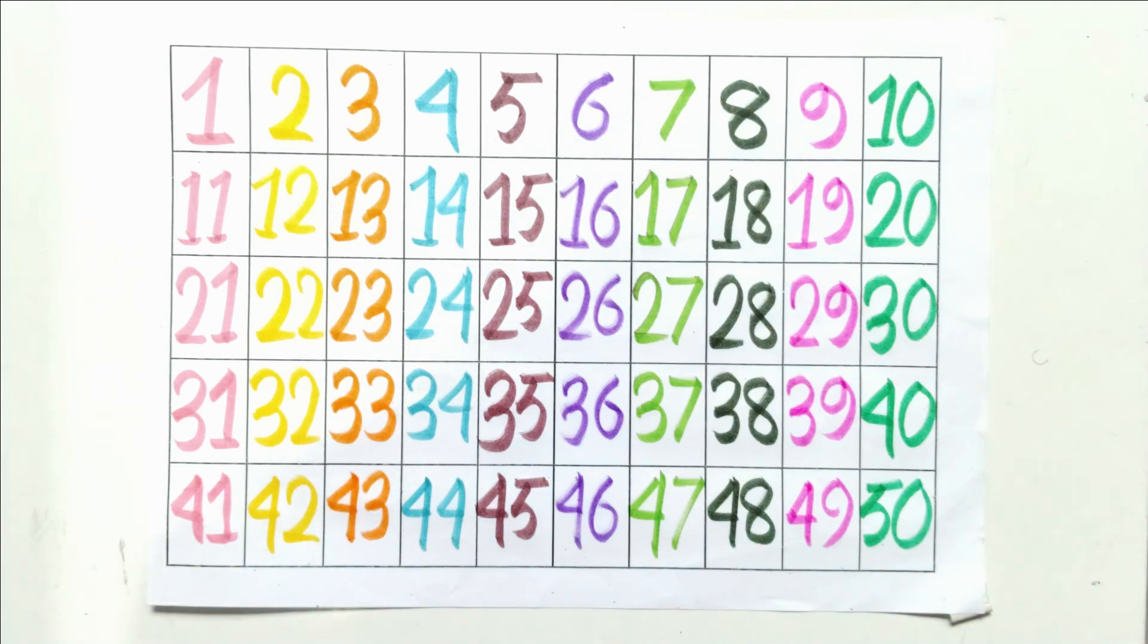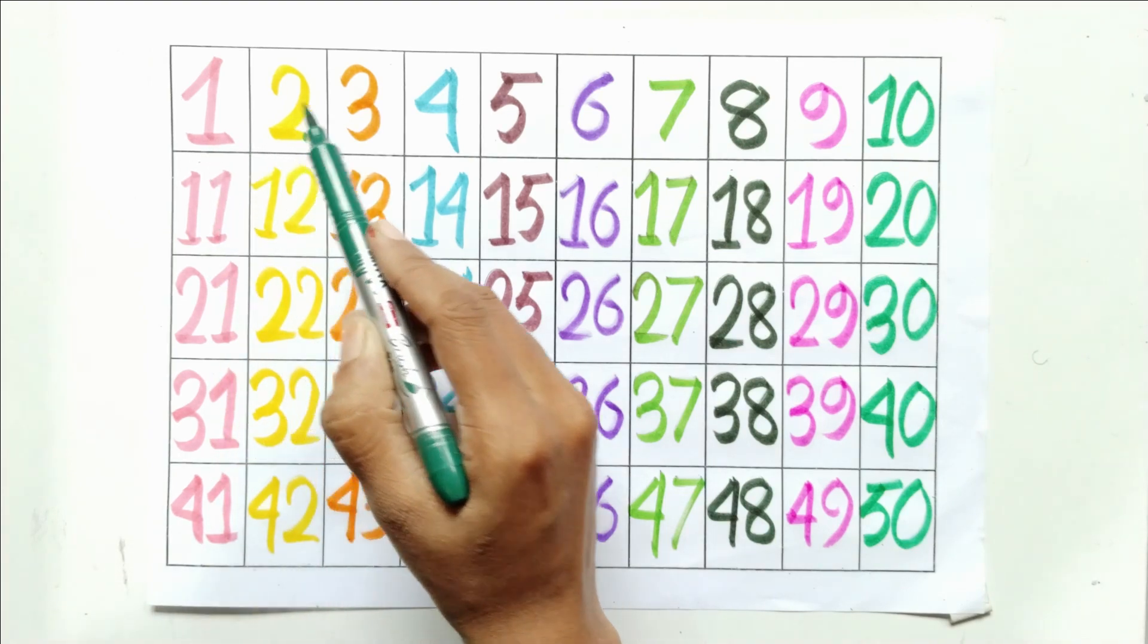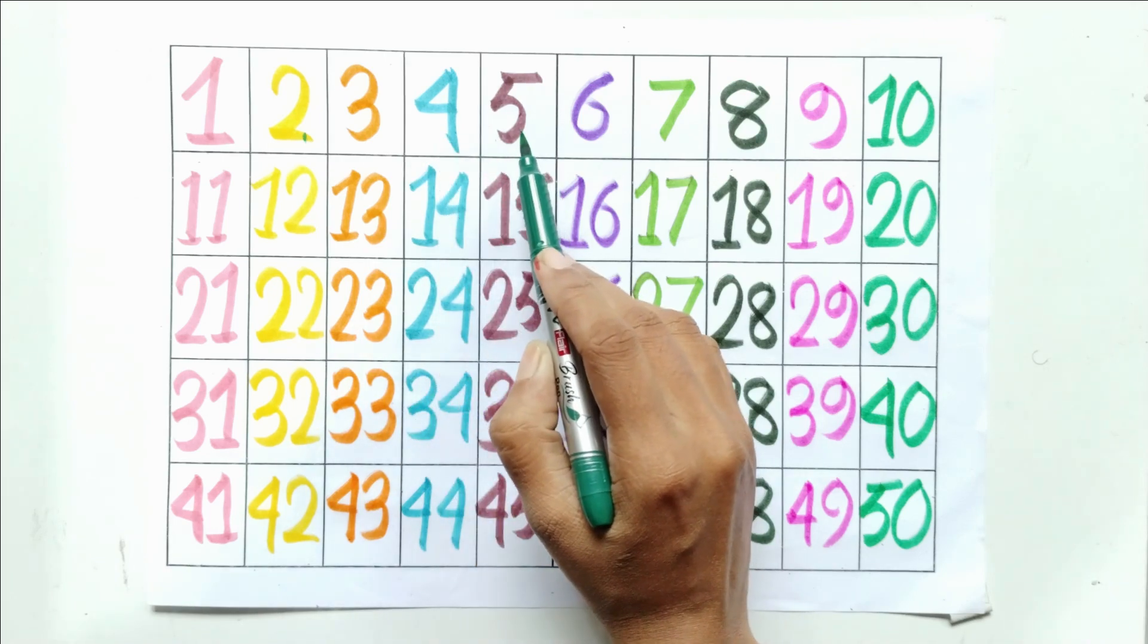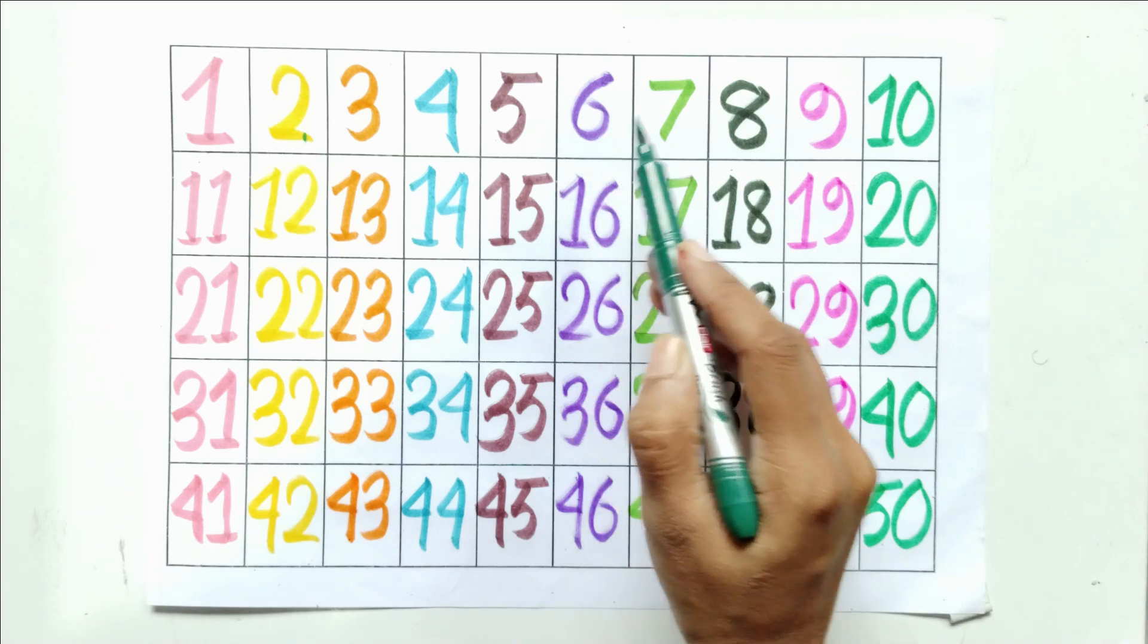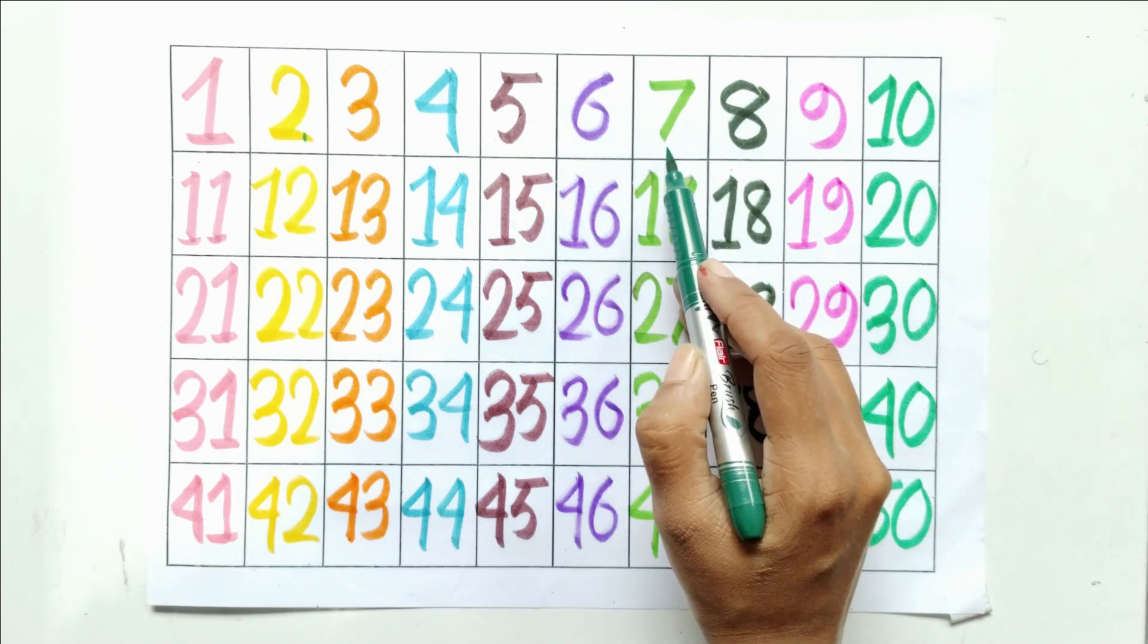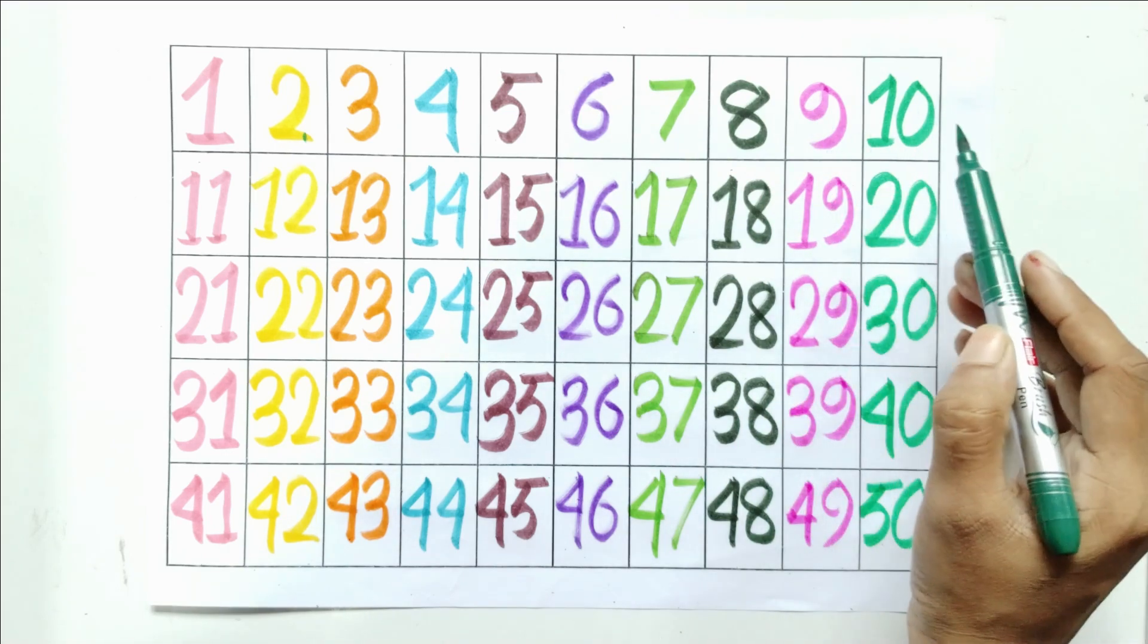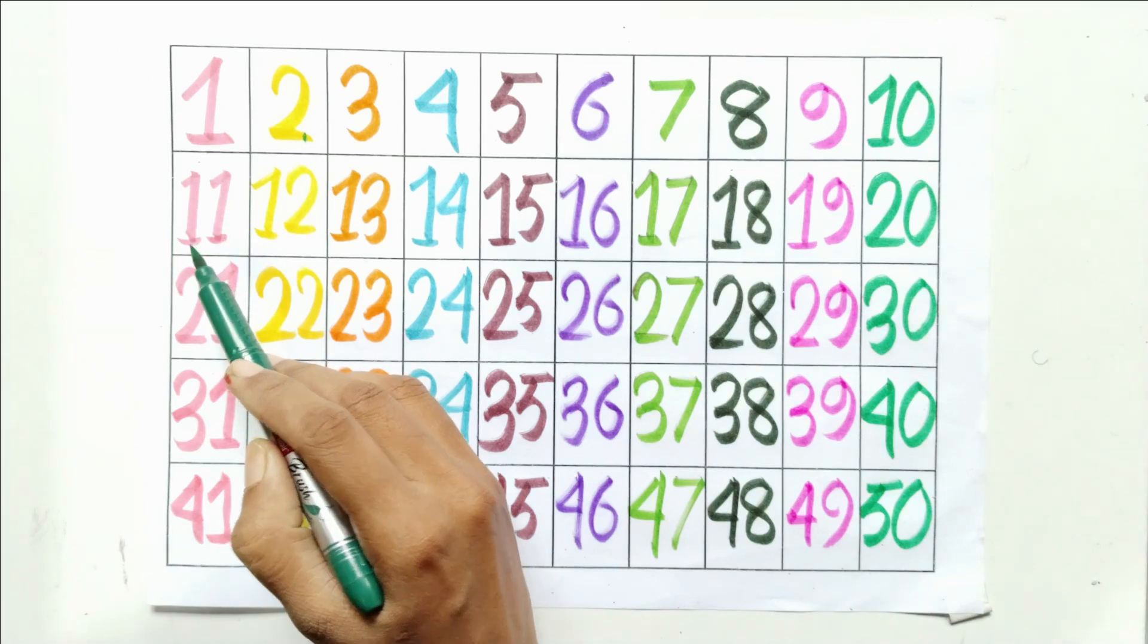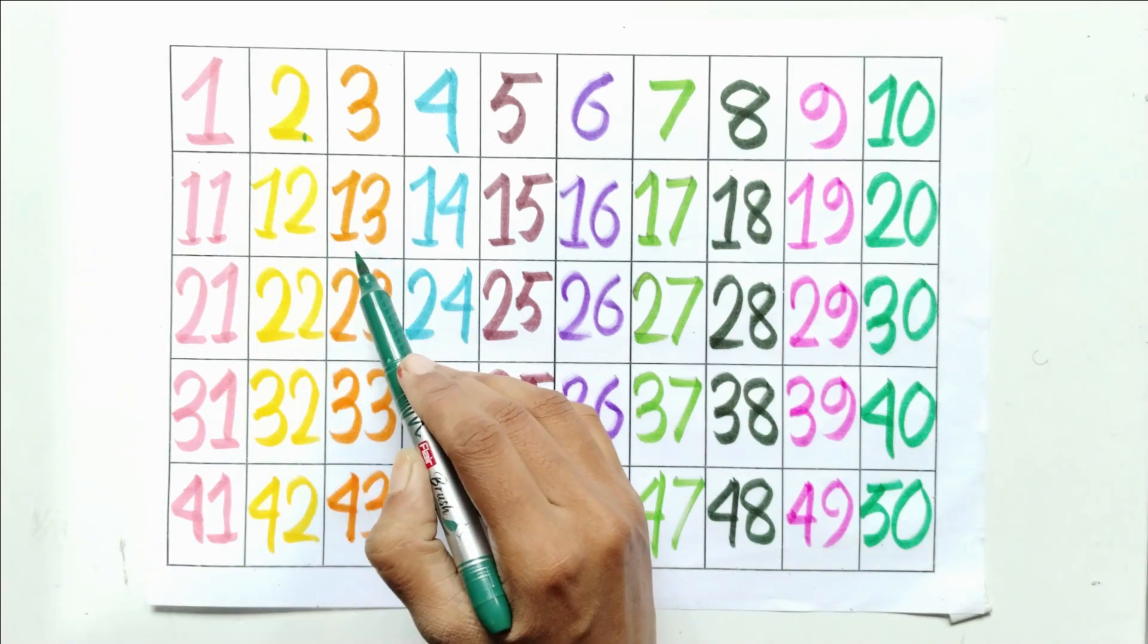Again count with me: one, two, three, four, five, six, seven, eight, nine, ten, eleven, twelve, thirteen.